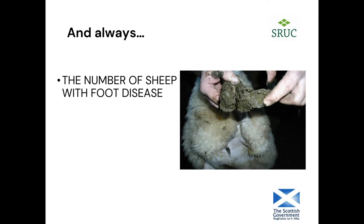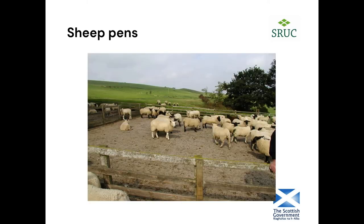One of the most important factors affecting how much foot disease you have is the number of sheep on your holding that already have it. I have seen smallholders buy a nice quality tup cheaply because he'd started to have a bit of bother with his feet, and all of a sudden some of their ewes developed foot problems too. Here's your ideal sheep pen — a nice flat concrete floor away from water runoff. Not many of you will have one of these, but it's great to think about.